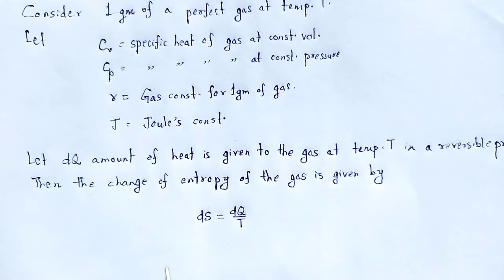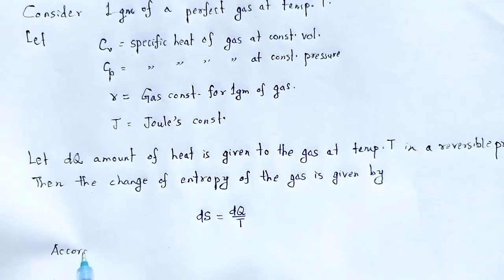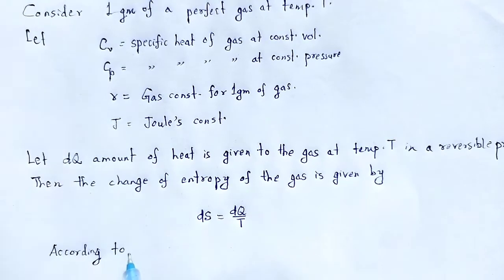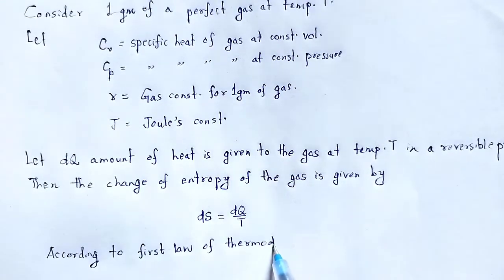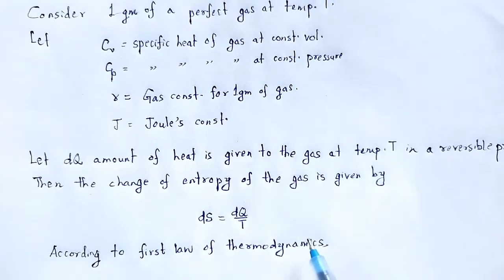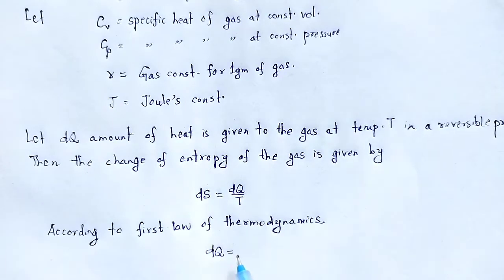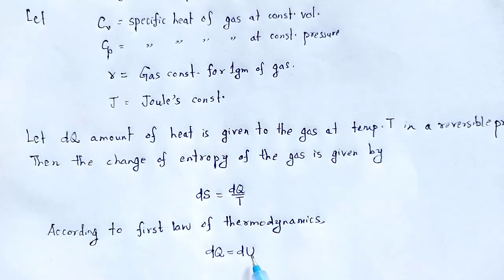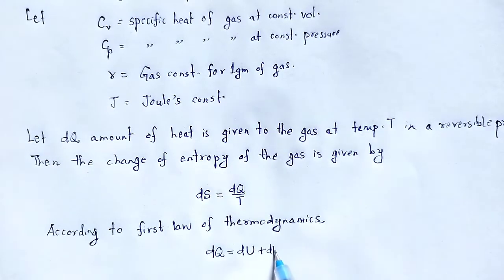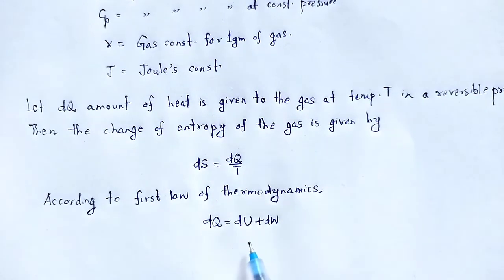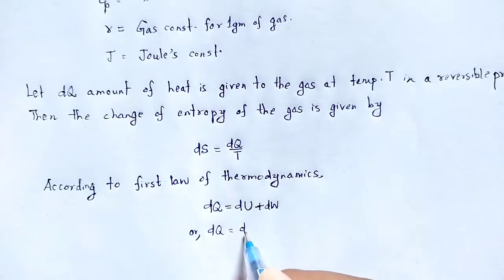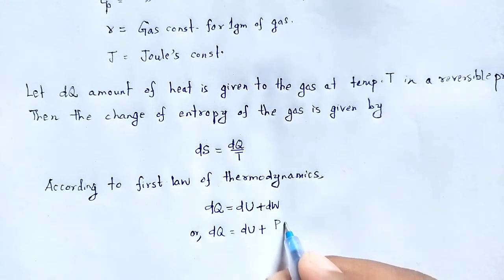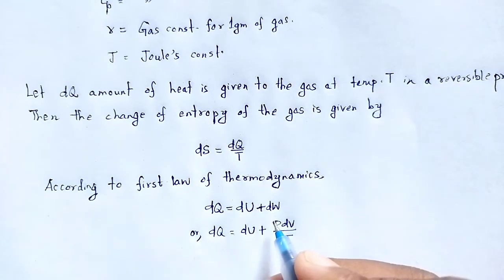We know from the first law of thermodynamics: if DQ amount of heat is supplied to a system, it is used to change its internal energy and some work done against external pressure DW. So DQ is equal to DU plus PDV divided by J, where J is Joule's constant.